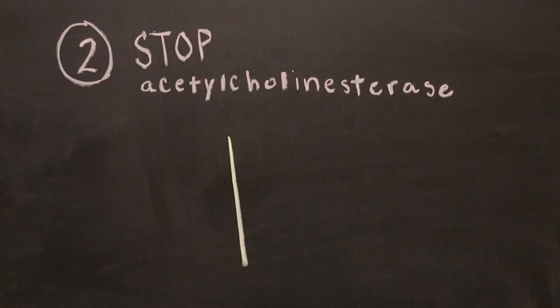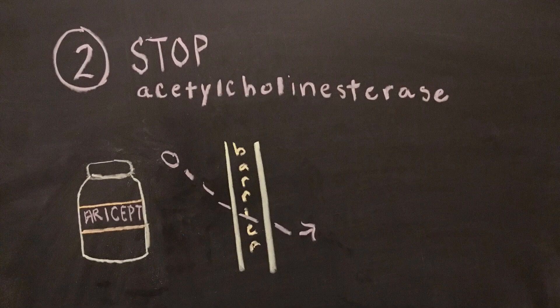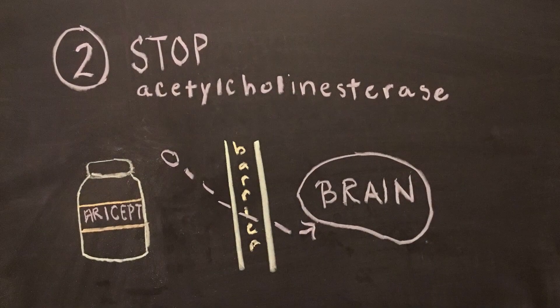That is why drugs such as Aricept are used in the treatment of Alzheimer's, because they are capable of passing the blood-brain barrier, inhibiting the enzyme that degrades acetylcholine.